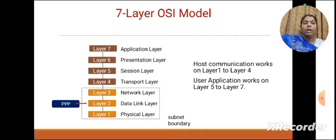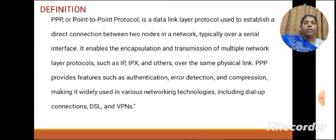The data link layer is provided with a Point-to-Point Protocol, and in this session we are going to see how this works. Point-to-Point Protocol is a data link layer protocol used to establish a direct connection between two nodes in a network, typically over a serial interface. It enables the encapsulation and transmission of multiple network layer protocols such as IP, IPX, and others over the same physical link.